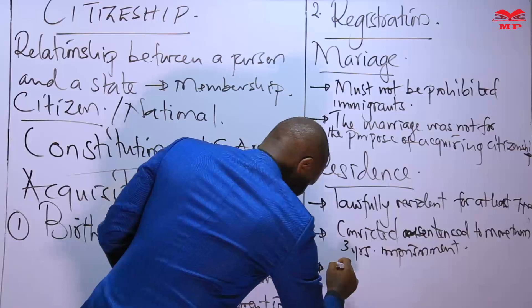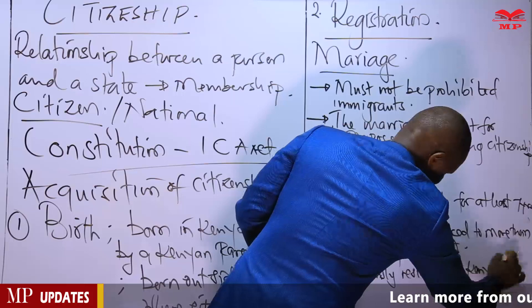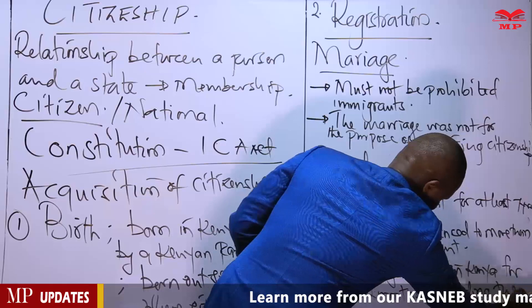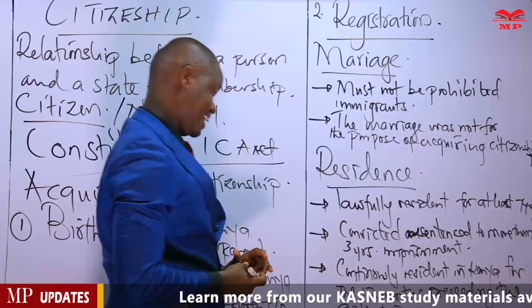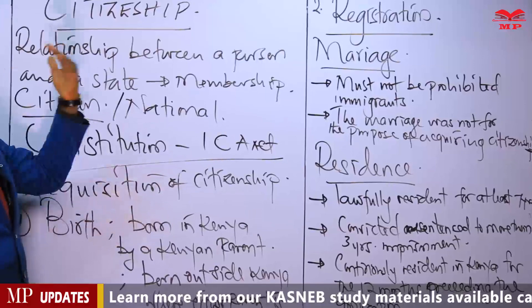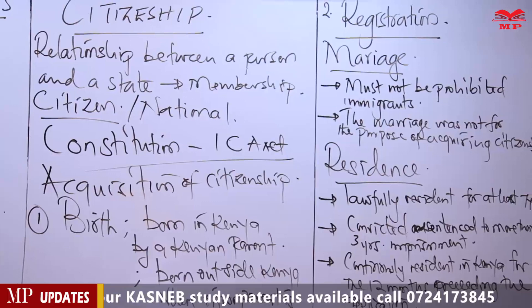It is also required that they have been continuously resident in Kenya for the 12 months — that is, a period of one year — preceding the application. So these two categories of foreigners: foreigners married to Kenyan nationals, and foreigners who have been lawfully resident in Kenya, if they meet these conditions as prescribed by the Immigration and Citizenship Act, then they do qualify to apply to become citizens of Kenya by registration.